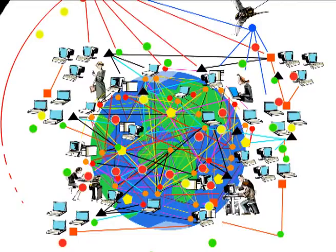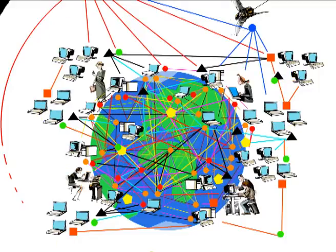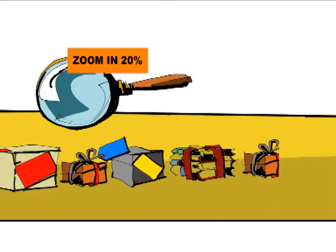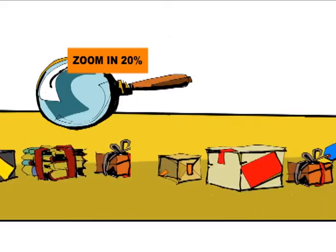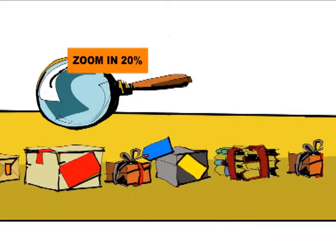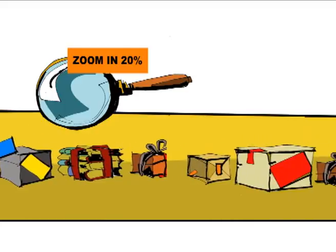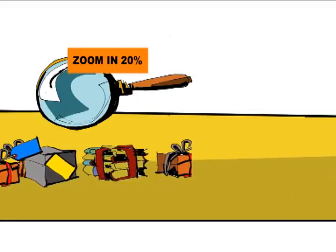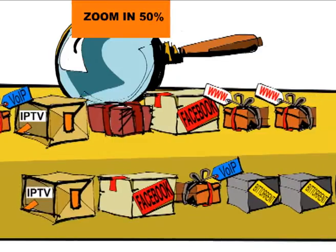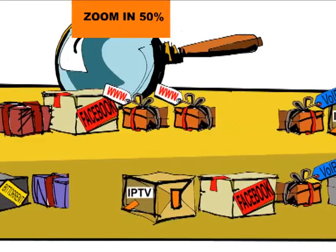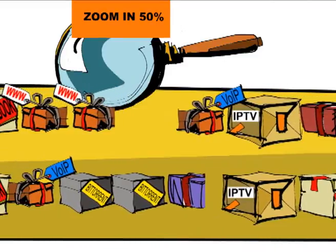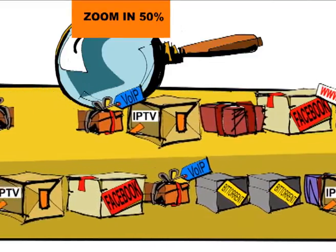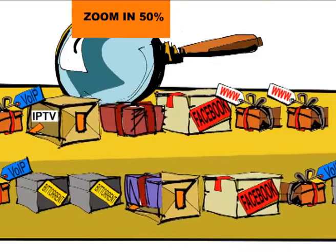The Internet is often referred to as the network of networks, where every day billions of data packages travel through cables to reach worldwide destinations, carrying information from a variety of services of many different types.